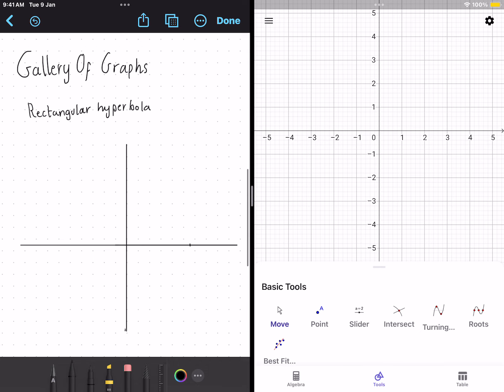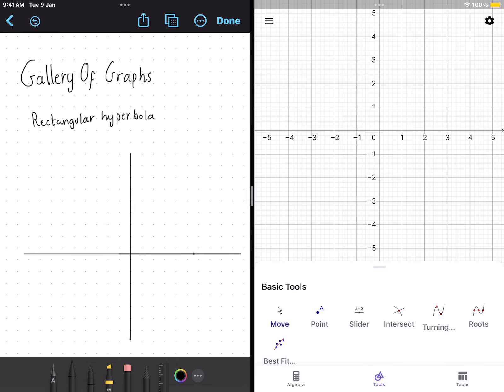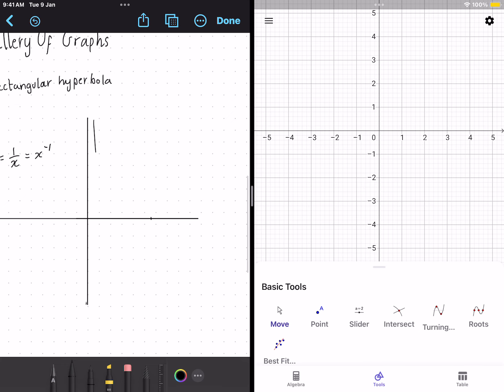Hey guys, today we're going to be looking at the gallery of graphs for rectangular hyperbola. The equation for the rectangular hyperbola is y equals 1 over x, or x to the power of negative 1. And the shape looks like this.